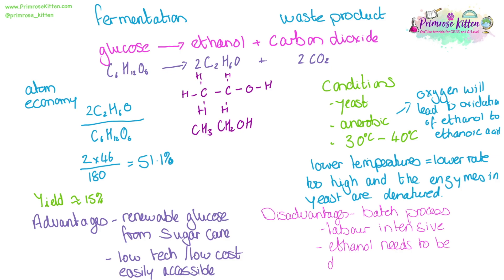The ethanol needs to be distilled afterwards to make it usable. And there are some issues around the ethics of using food — the glucose and sugarcane that could potentially be used for food when there are people starving — and using land to grow sugarcane to be turned into ethanol, when that land could be used to grow crops to feed people.